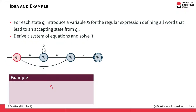Let's look at this particular example. We start with the initial state q1. We introduce a variable x1, which should define a regular expression for all the words that lead from q1 to our accepting state q4. To get to the accepting state, we consider all possible outgoing transitions. The first possible outgoing transition is the 'a' leading to q2. So all the words using this 'a' transition would start with an 'a' and then continue with all the words that lead to an accepting state starting in q2, which are the words defined by x2.